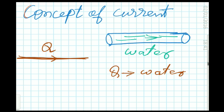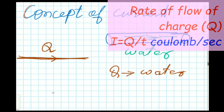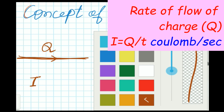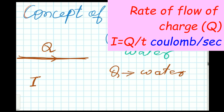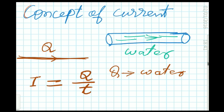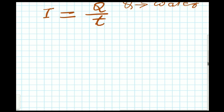So what is current? Current can be defined as the rate of flow of charge. If we designate current with I, then we can say I equal to Q by t — that means current equals charge divided by time. The SI unit of current is ampere.